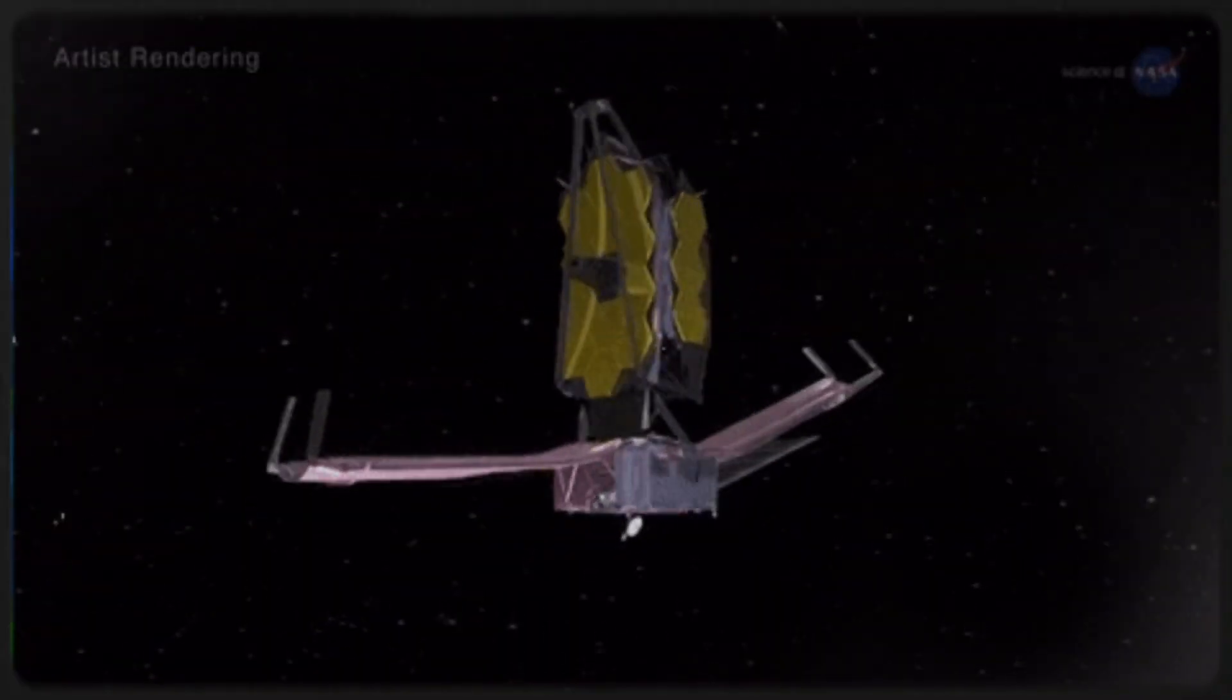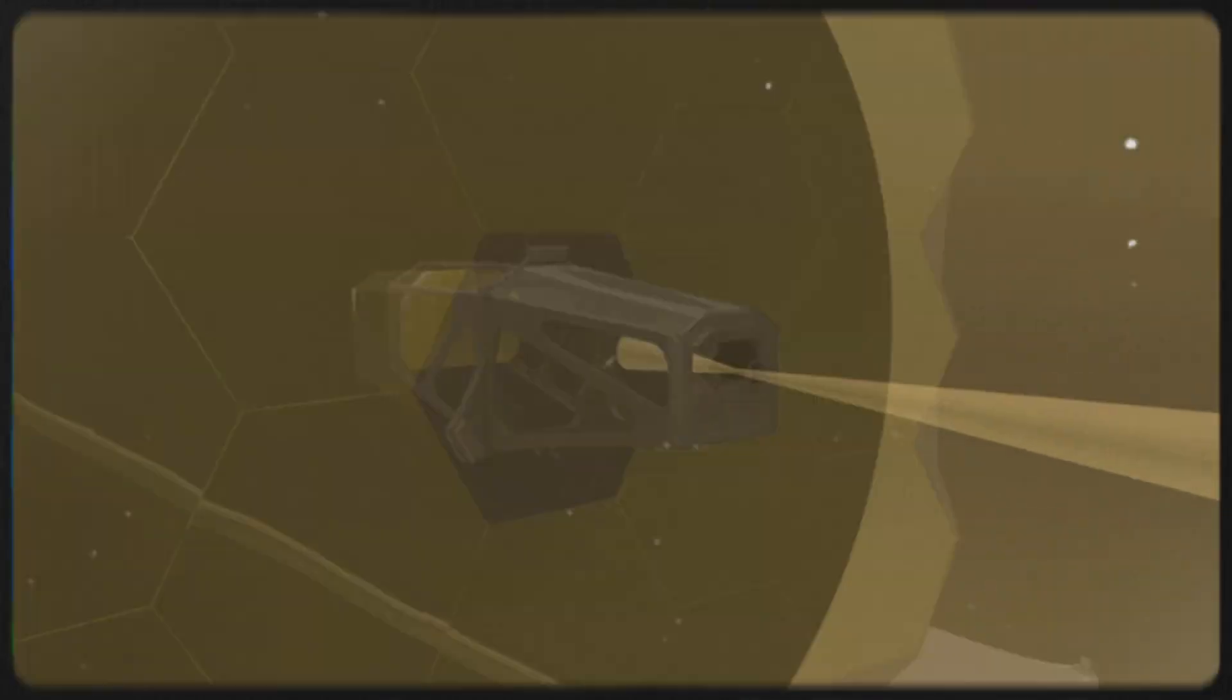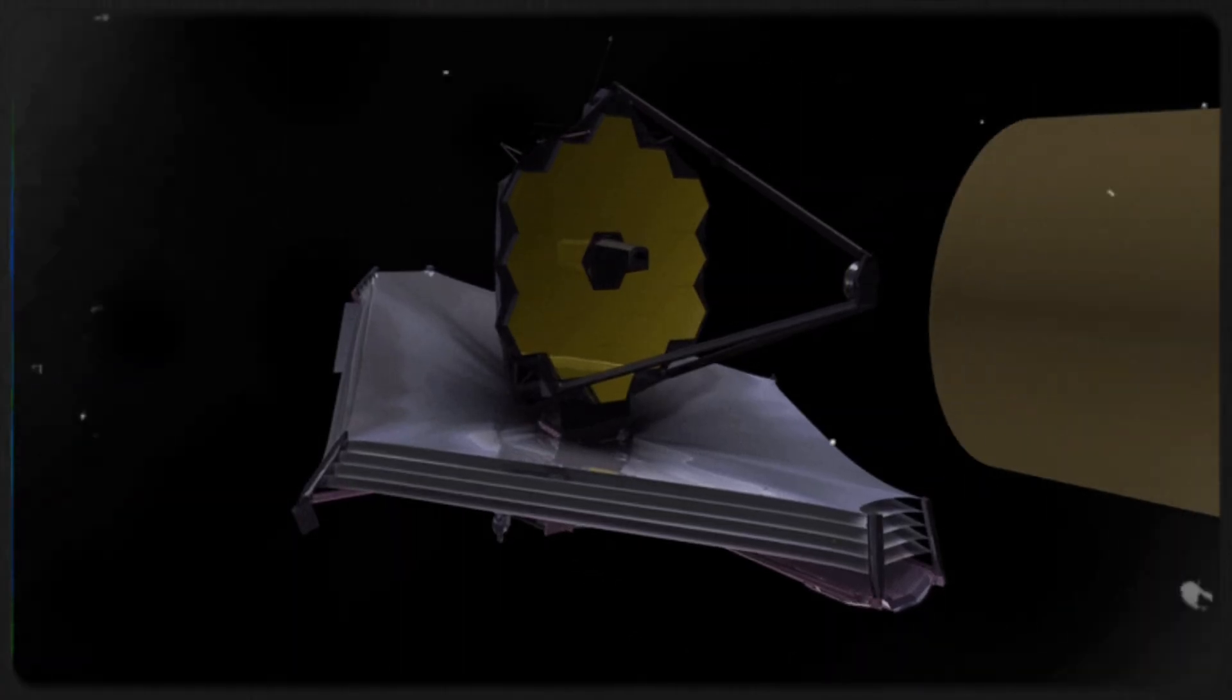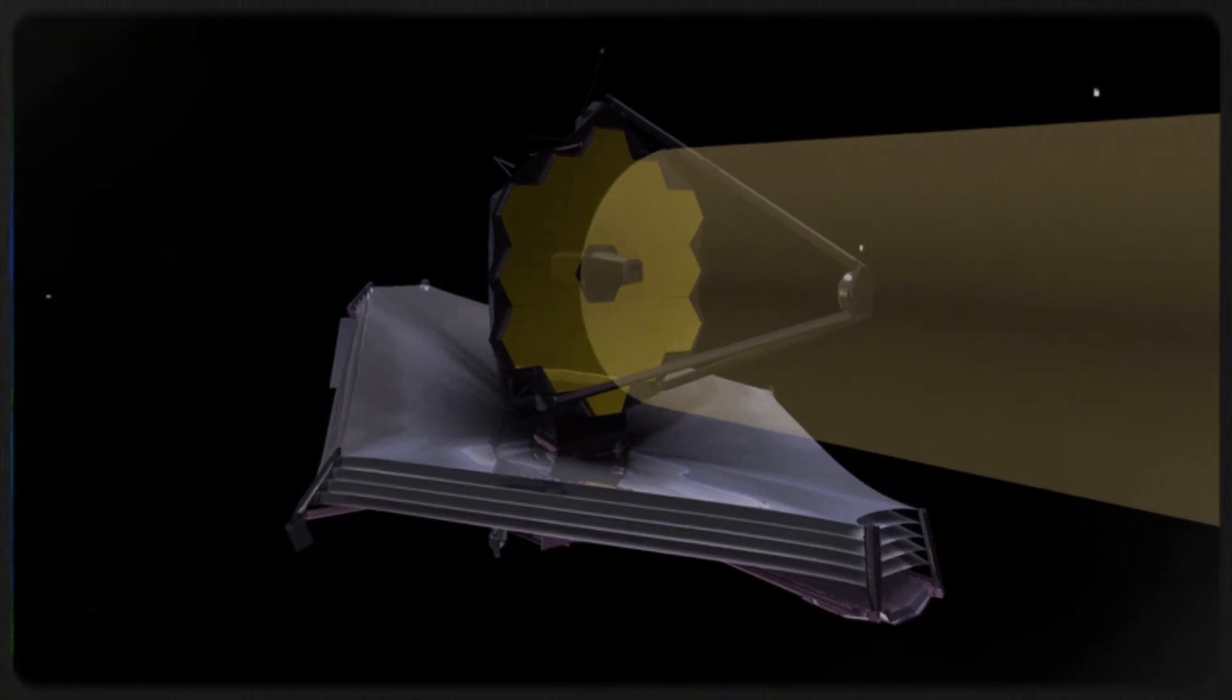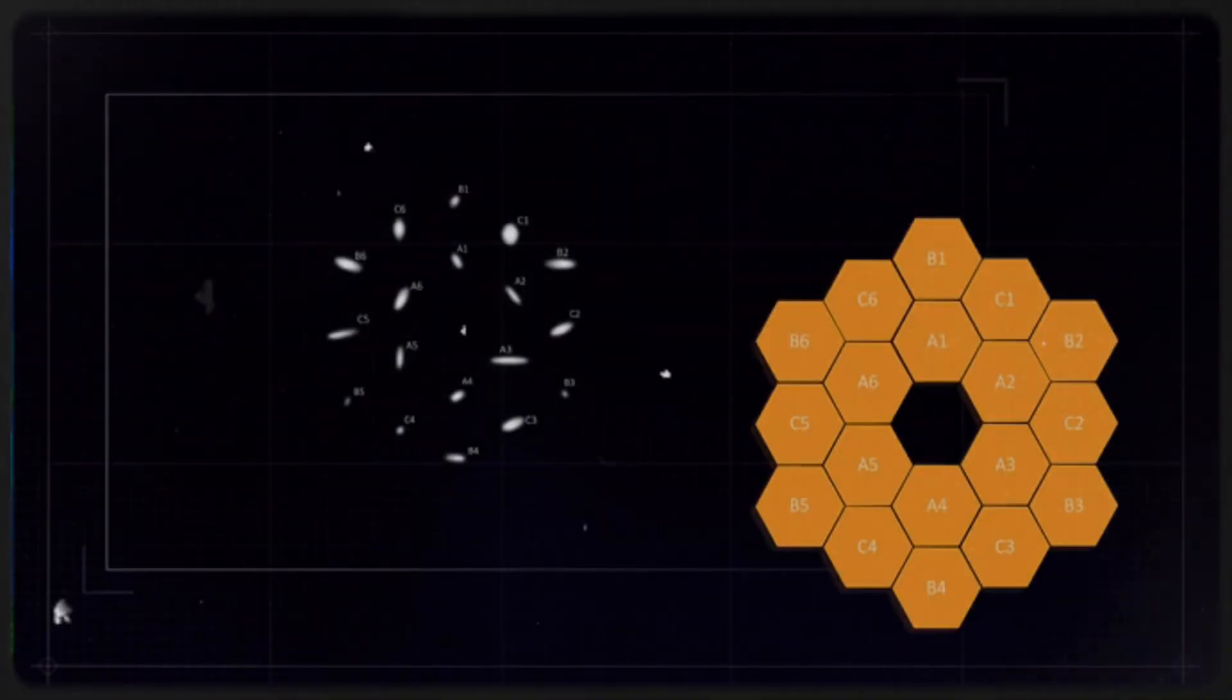Webb's infrared capabilities are perfect for revealing star and planet formation for three main reasons. Infrared light penetrates dust effectively, detects the thermal signatures of young stars and planets, and reveals key chemical components like water and organic molecules.